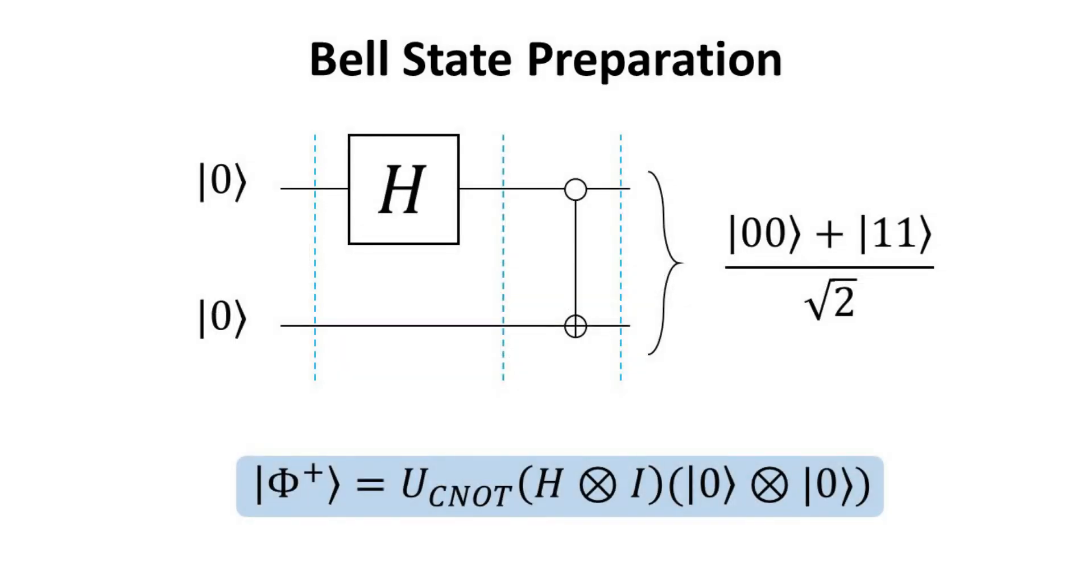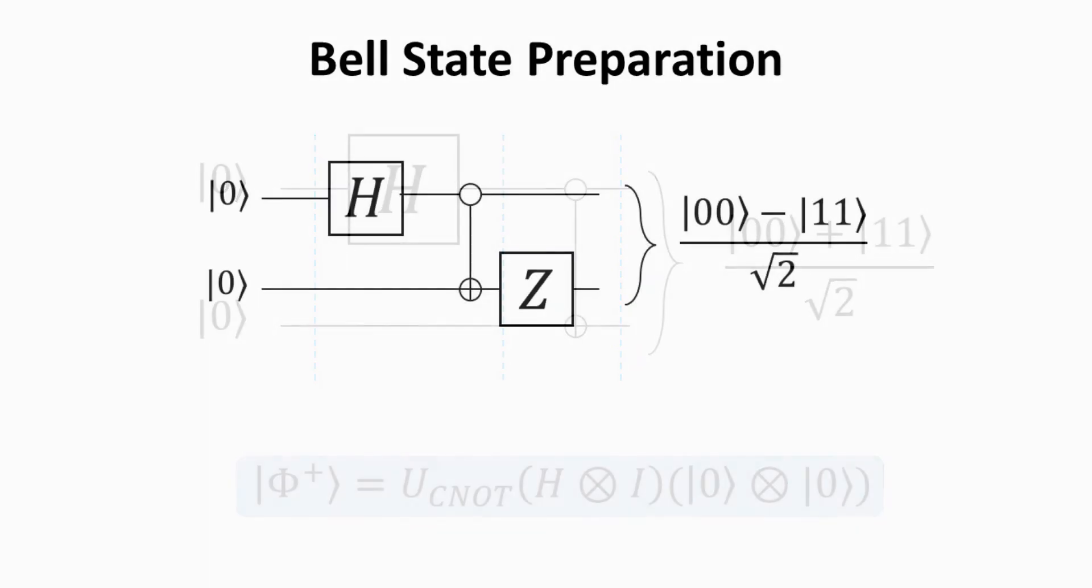We can readily see that it is equivalent to the phi plus Bell State. Hence, we have shown that by applying the H gate to the first qubit followed by a CNOT gate, we can obtain one of the maximally entangled two qubit states.